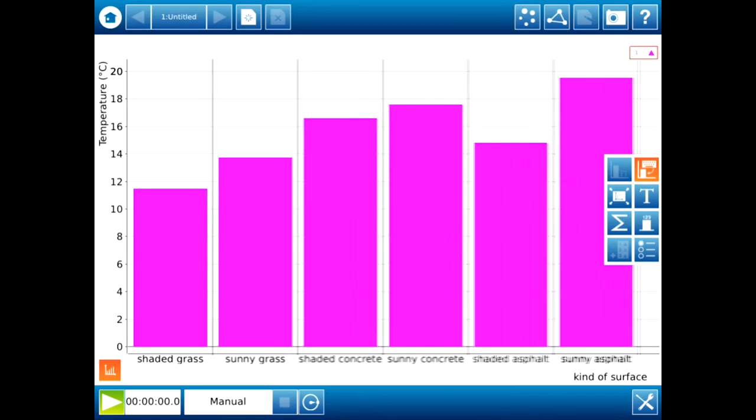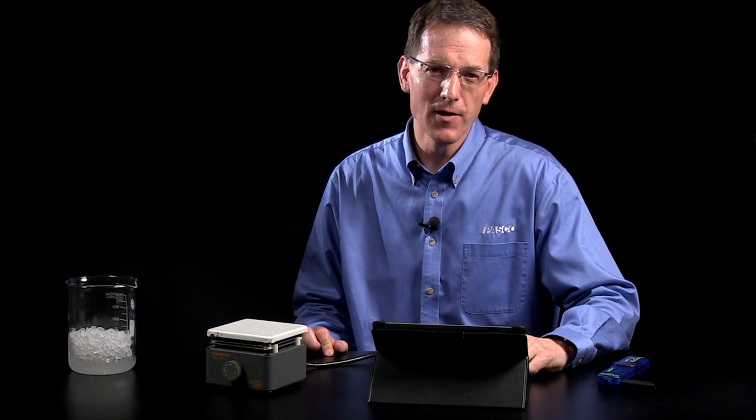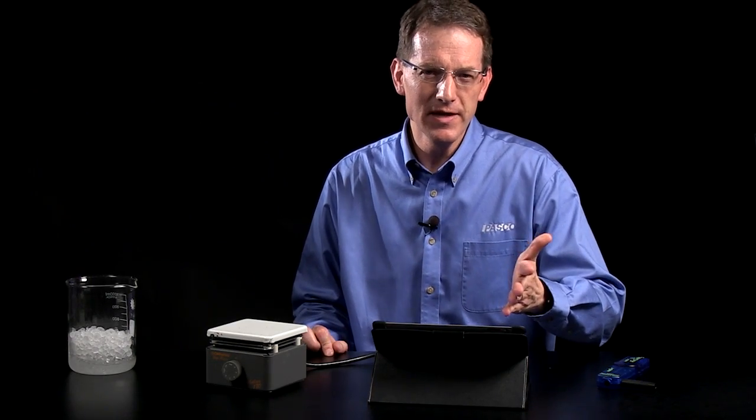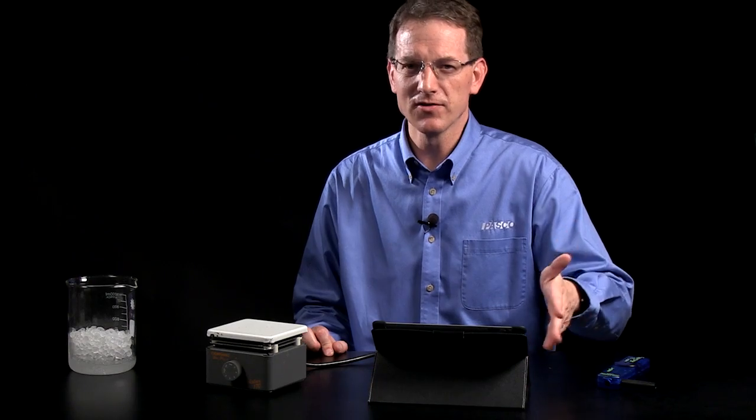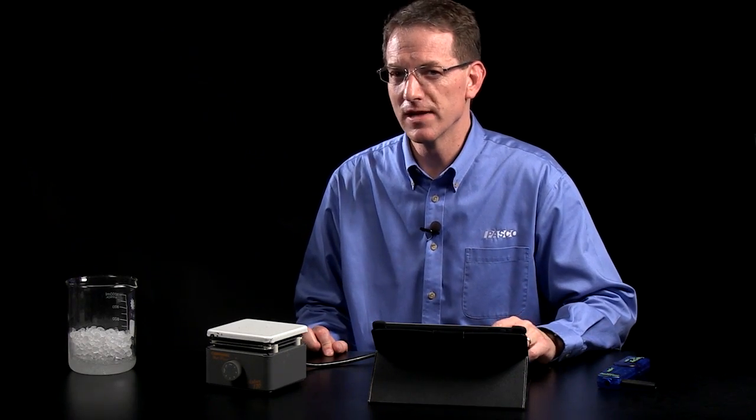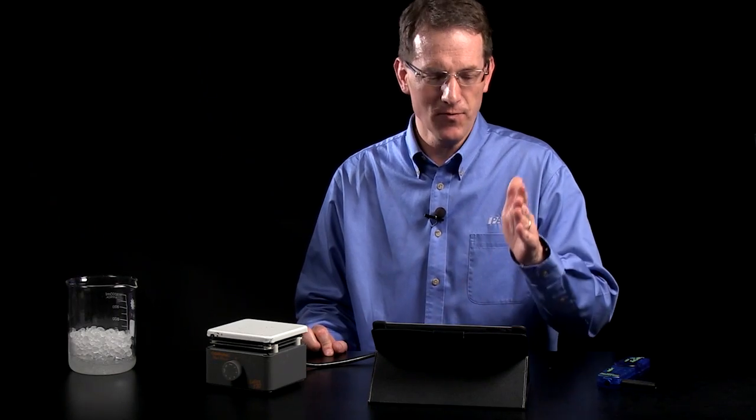So what you see here is we have data showing grass, concrete, and the asphalt when it was in the sun versus when it was in the shade. You can use this software any time that you're going to be collecting data at specific points, like maybe dissolved oxygen at different points along a stream or the light level below trees in a forest. Very helpful for discrete data.